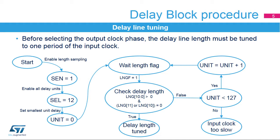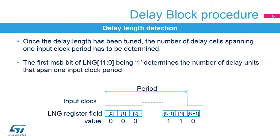When the maximum delay unit is reached and the check is still false, the input clock is too slow to fit one complete period in the delay line. Once the delay line is tuned, you can determine how many delay units span one input clock period. Starting from the LNG 11 to 0 most significant bit downwards, the first bit set to 1 determines the number of delay units. Number of delay units equals bit index plus 1. For example, if the first LNG bit set to 1 is bit number 10, then 11 delay units — 0 to 10 — span one input clock period.